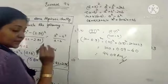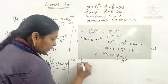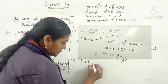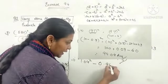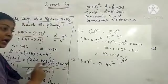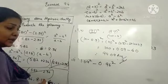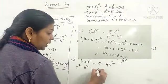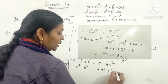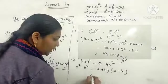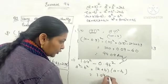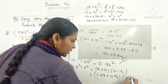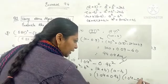One more part. I is given to you, and it is given 1.04 square minus 0.96 square. Again, it is A square minus B square. Substitute the values in the formula: A plus B into A minus B. It will be 1.04 plus 0.96, 1.04 minus 0.96.